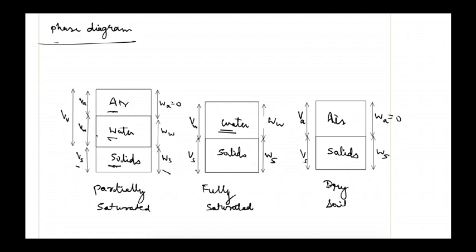A soil sample may exist in a three-phase or two-phase condition. It cannot exist in a single-phase condition, which means soil solids cannot be compacted to such a stage that there will be no voids — some voids will always be there. In a partially saturated soil, not all pores are filled with water; some pores are filled with water and some are filled with air.